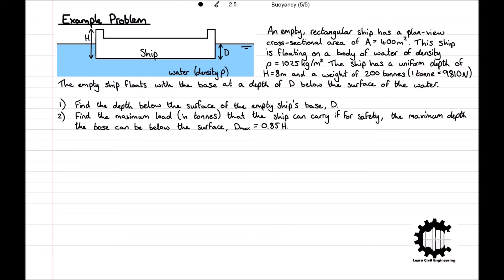The empty ship floats with the base at depth d below the surface of water. Firstly, find the depth d of the empty ship's base, and then find the maximum load in tons that the ship can carry if for safety the maximum depth dmax is equal to 0.85h.